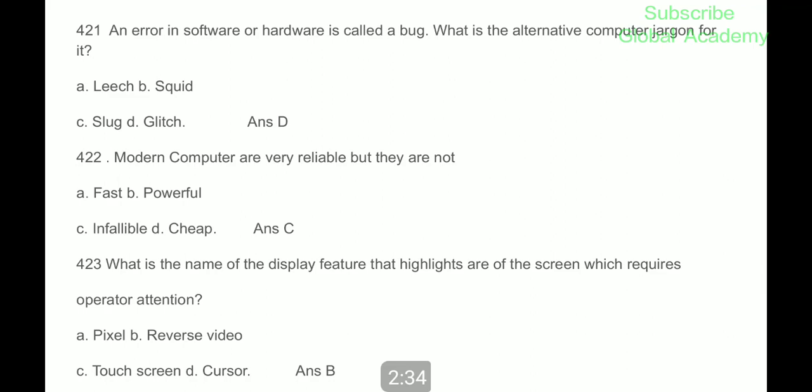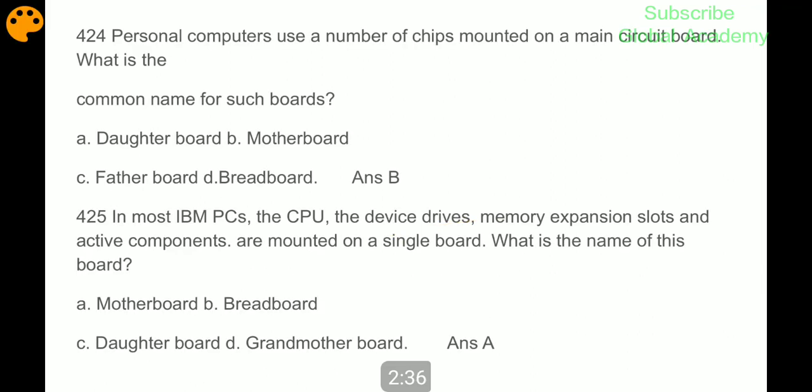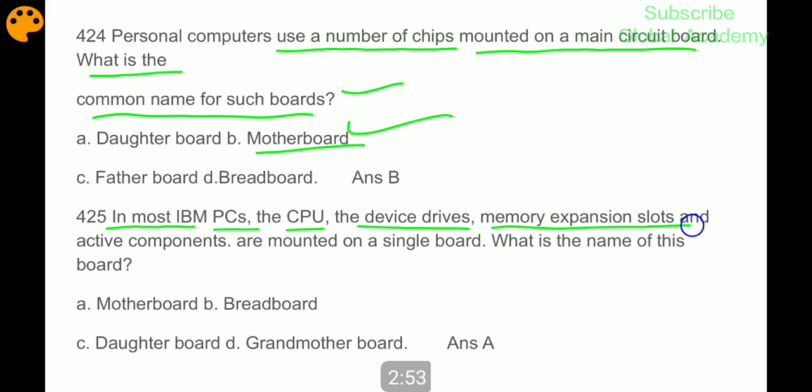Reverse video. Personal computers use a number of chips mounted on a main circuit board. What is the common name of such boards? Motherboard. In most IBM PCs the CPU, the device, drives memory, expansion slots and active components are mounted on a single board.